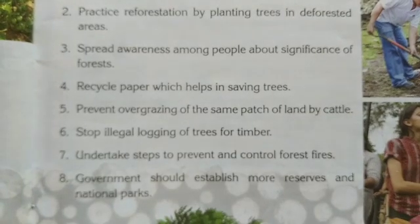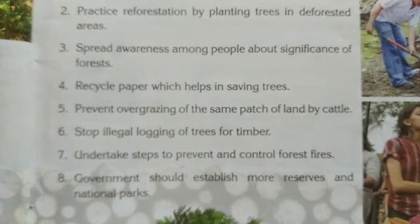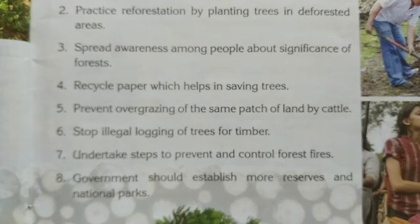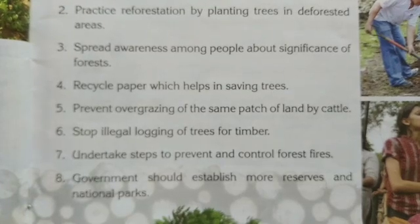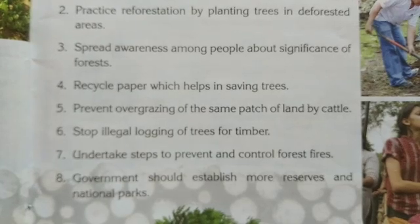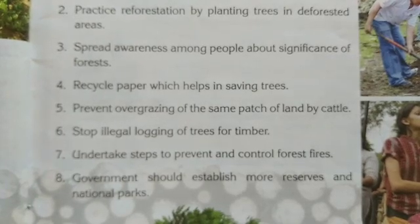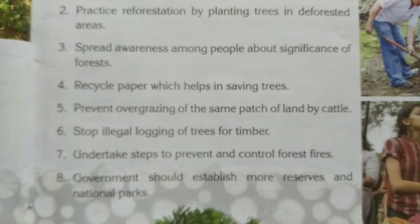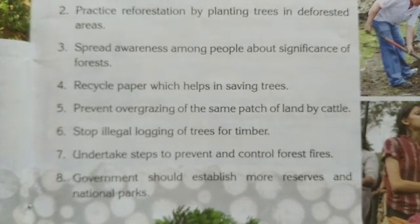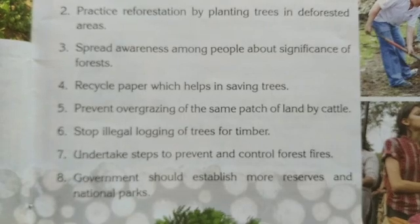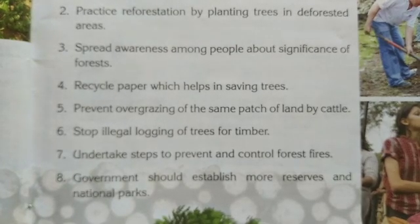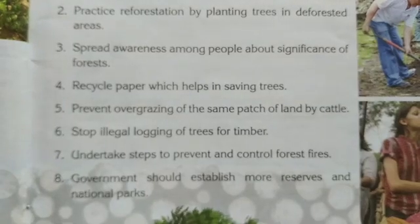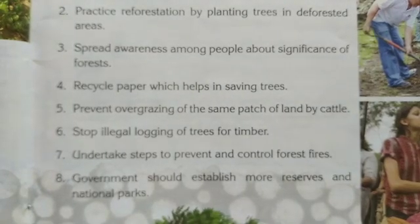So students, these are all about deforestation. Due to deforestation, different problems occur such as soil erosion, decreased rainfall, global warming, landslides, desertification, floods, depletion of water table, habitat destruction, and extinction of some animal species. Thank you. In the next video, we will discuss the next topic.